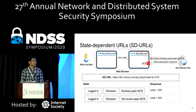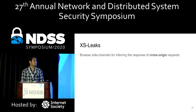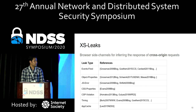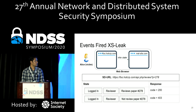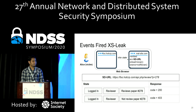This is where the second concept comes into play: cross-site leaks. Cross-site leaks are browser-side channels for inferring the responses of cross-origin requests. In the events-fired cross-site leak, the malicious website embeds an HTML tag pointing to the state-dependent URL and makes use of page-level events like onload and onerror. Here the embed HTML tag is used: the onload event points to a reviewer function and the onerror event points to a not-reviewer function.